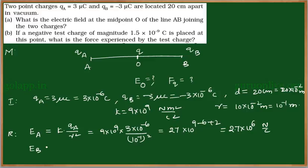Similarly, the field at O due to charge QB equals K × QB divided by R squared. Since the magnitude is the same for QA and QB, EB will also have the same value as EA, giving 2.7 × 10⁶ Newton per coulomb.